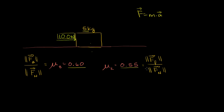In either situation, the force of friction acts against your motion. Let's calculate the force needed to overcome static friction. The force of gravity on the block is 9.8 meters per second squared times 5 kilograms, which gives us 49 Newtons downward. This is the magnitude of the force due to gravity, directed straight down toward the center of the Earth.